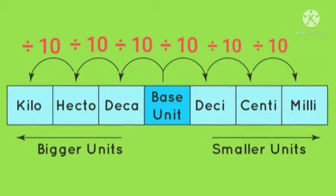Now look at the chart. The base of the standard unit is in the middle, which can be meters, grams or liter. And to the right we have the smaller units: deci, centi, milli. And to the left are the bigger units: deca, hecto and kilo.